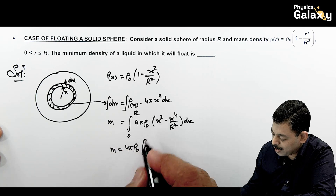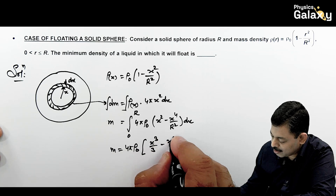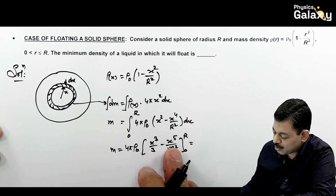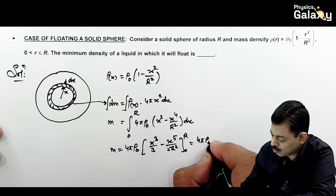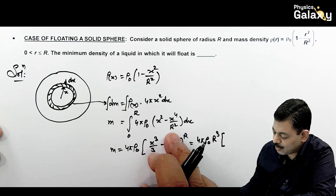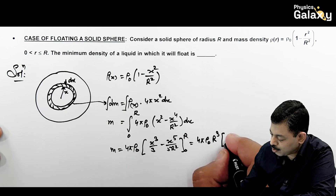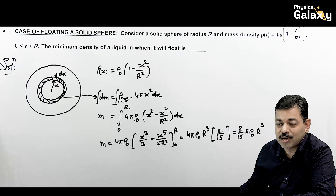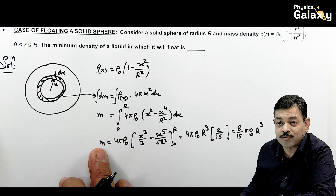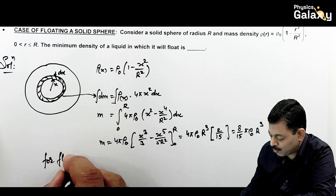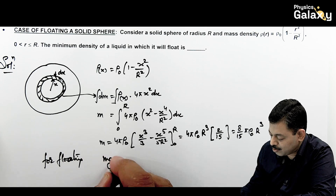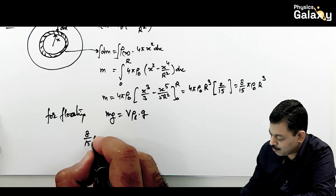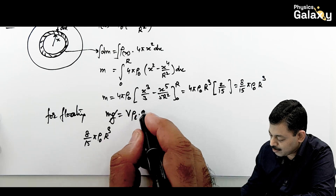Integrating gives 4π·ρ₀·[x³/3 - x⁵/(5R²)] from 0 to R, which becomes 4π·ρ₀·R³·(1/3 - 1/5) = 4π·ρ₀·R³·(2/15), giving total mass = (8/15)π·ρ₀·R³. For floating, mg must balance V·ρ_liquid·g, so (8/15)π·ρ₀·R³·g = (4/3)π·R³·ρ_liquid·g.